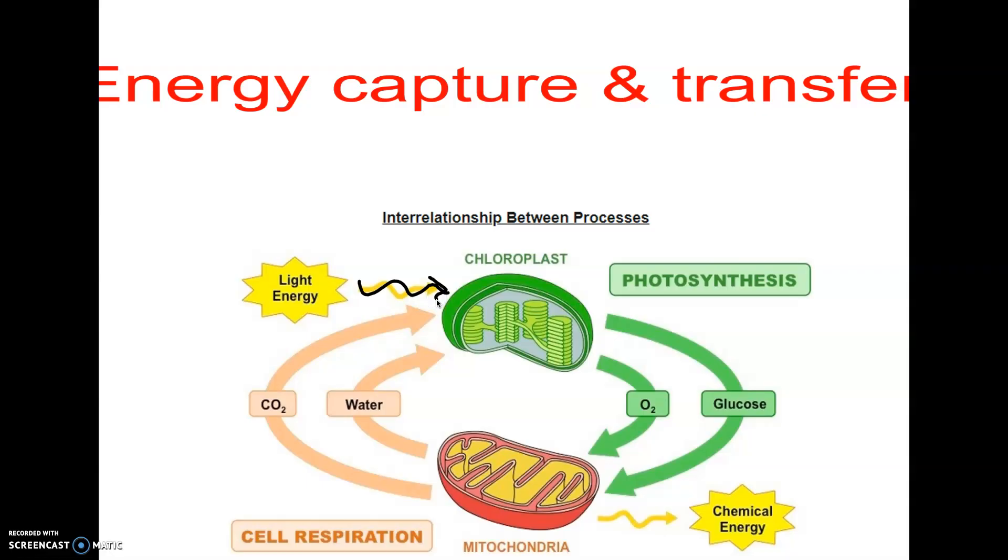Light hits the chloroplasts, and photosynthesis occurs. Now in photosynthesis, what ends up happening is we make glucose, C6H12O6, and photosynthesis also releases oxygen, sort of as a waste product.